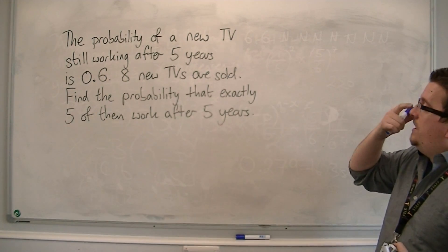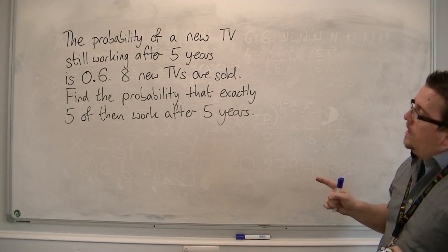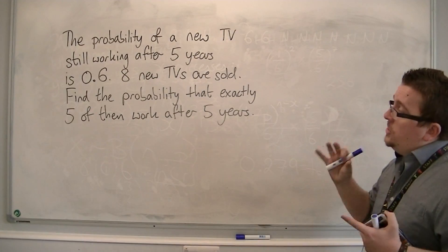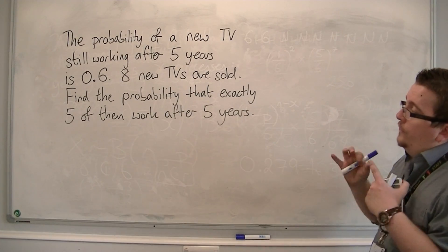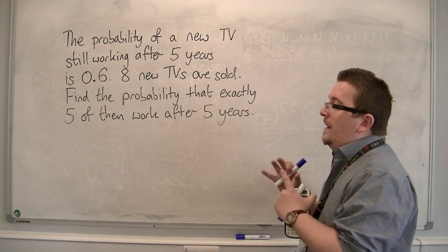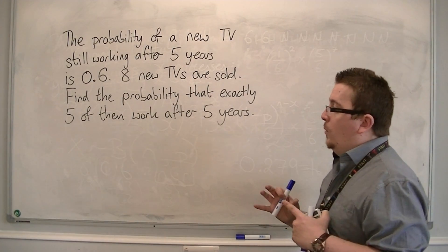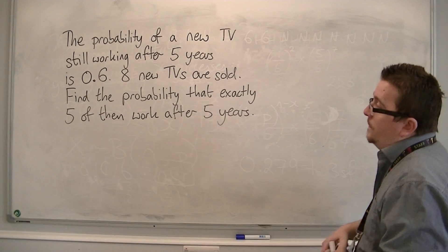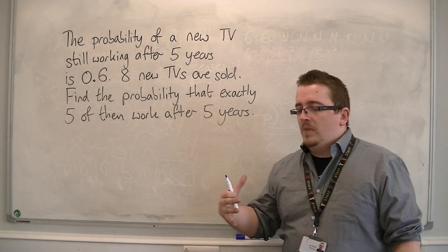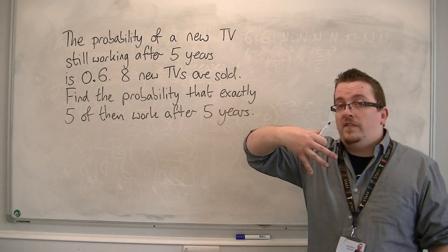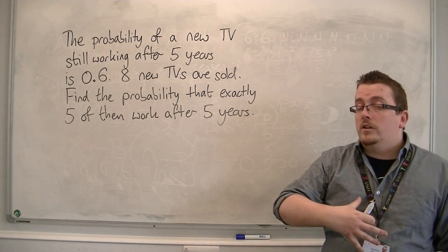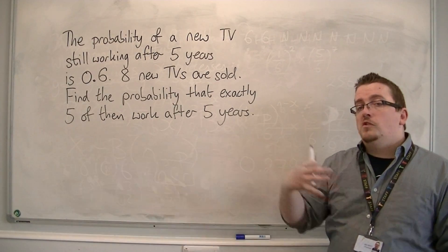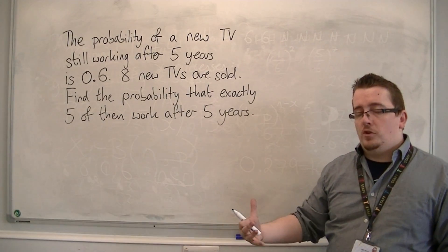The probability of a new TV still working after five years is 0.6. Eight new TVs are sold. Find the probability that exactly five of them work after five years. We can say that because we're looking at the TVs — they either work or they don't work — it is suitable to use a binomial distribution.